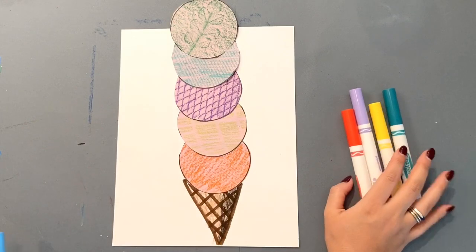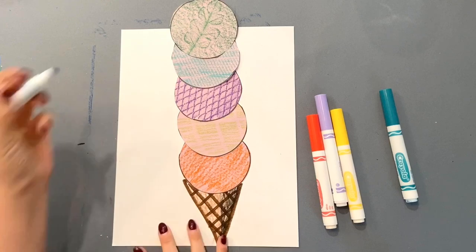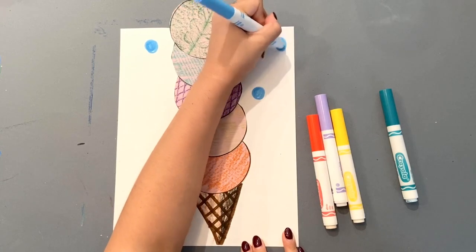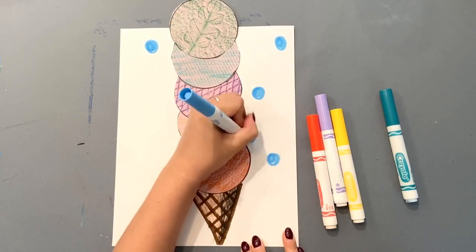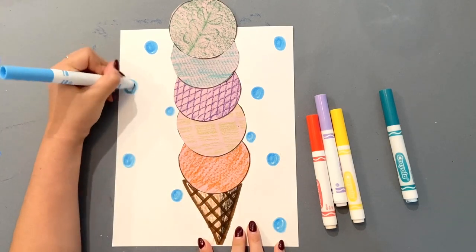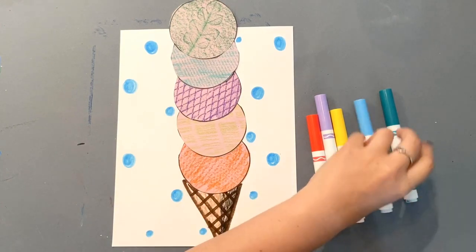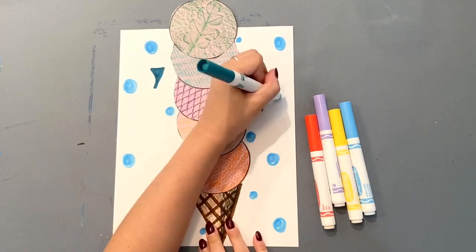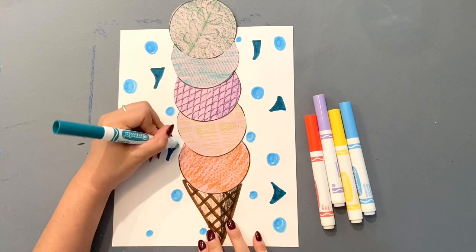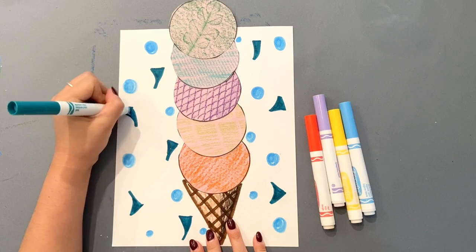At this point you have a couple options. You can either decide your ice cream looks delicious as is and be done with it, or you may be like me and want to add some details to your background. I'm going to use different colors and add some geometric shapes to my background. Either way, however you do it, I hope you had fun on your texture scavenger hunt and that you created the most delicious looking ice cream cone in the whole wide world. Have fun!